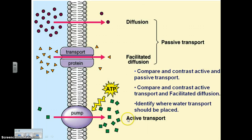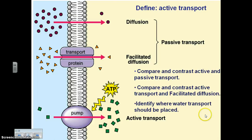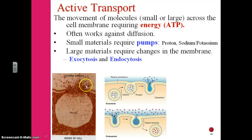Look at the diagram and then summarize what you see using the three bulleted items, and when you've done so you should be able to define active transport. Active transport, then, is really a movement of molecules — whether large or small — across the cell membrane, but this requires energy.